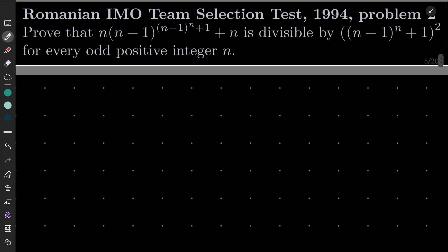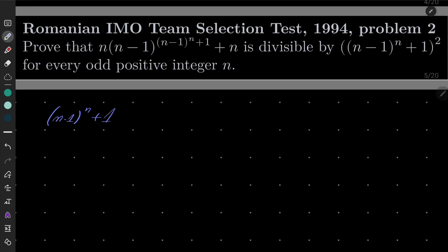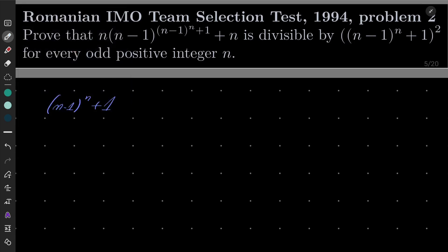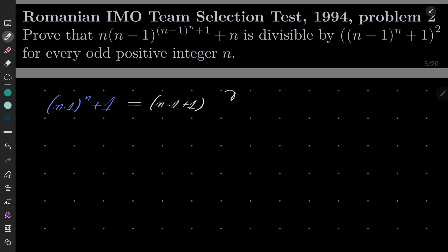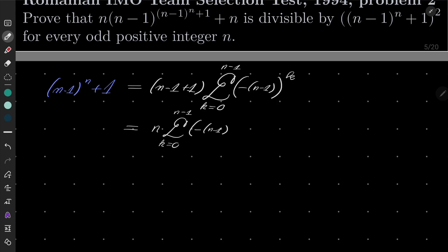Here is my solution. First, let's take this exponent n minus one to the power of n plus one. I want to write it in the following way. Using the factorization I hinted at, since this exponent is odd, we can factorize this as n times the sum going from k equals zero to n minus one of minus n minus one to the power of k.